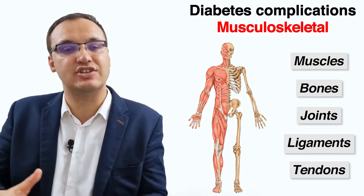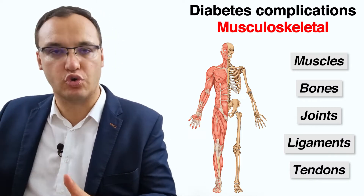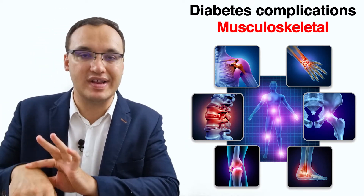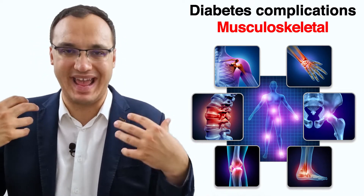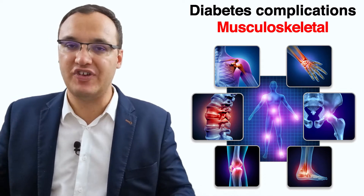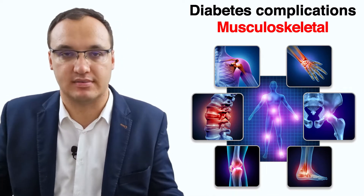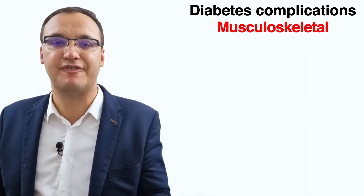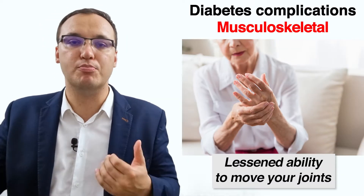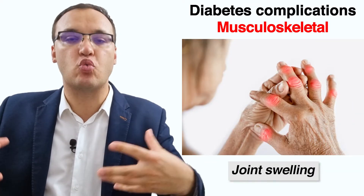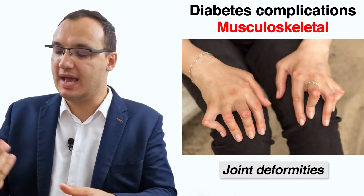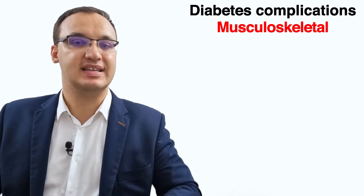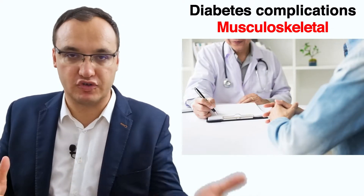These complications lead to changes that can cause numerous conditions affecting your fingers, hands, wrists, shoulders, neck, spine, and feet. Symptoms can include muscle pain, joint pain, stiffness, lessened ability to move your joint, joint swelling, deformities, and pins and needles sensation in the arms or legs. This can be different from person to person.